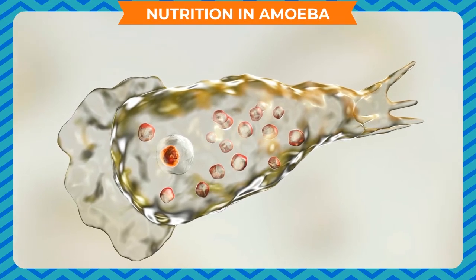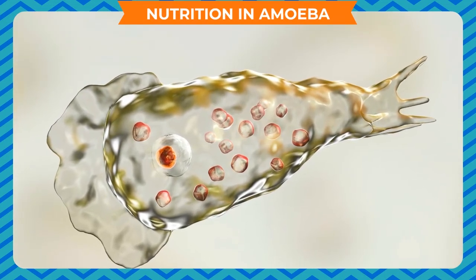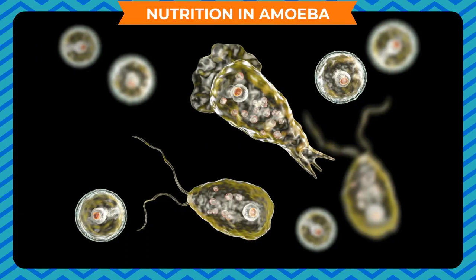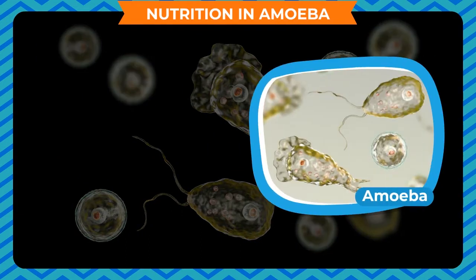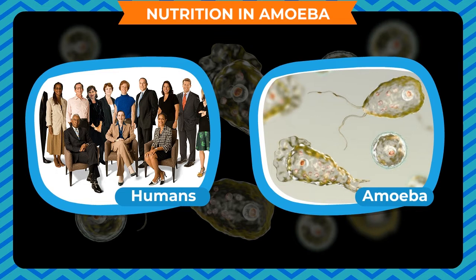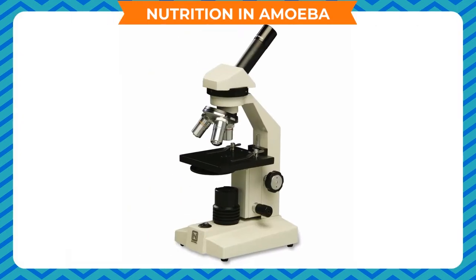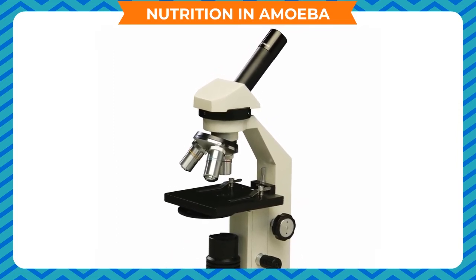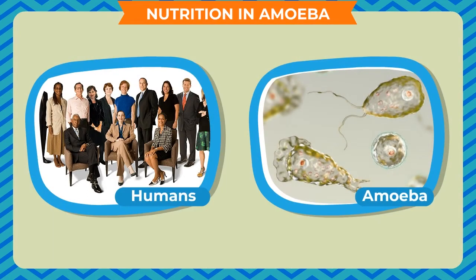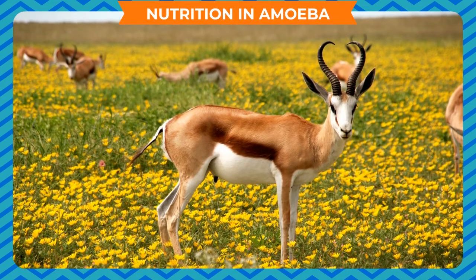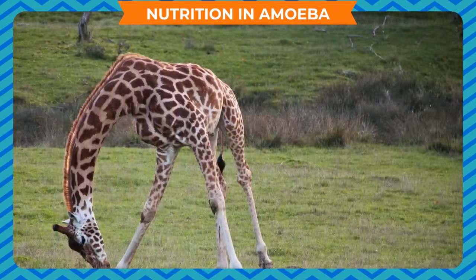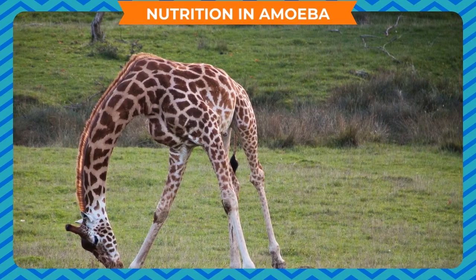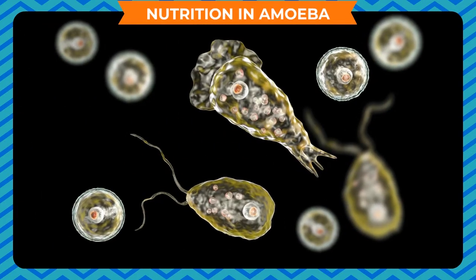Nutrition in Amoeba: The amoeba is a single-celled organism while we are made up of millions of cells. Still, amoeba and humans both have a heterotrophic mode of nutrition. You may wonder that amoeba, which cannot be seen without a microscope, is able to eat its food. However, the system of nutrition is different in amoeba and much different in human beings. Similarly, it is different in other animals, but the basic steps of heterotrophic mode of nutrition remain the same.